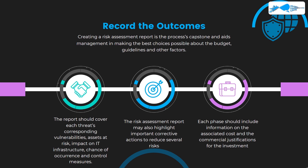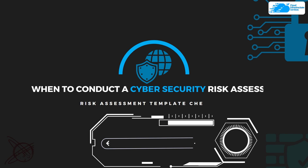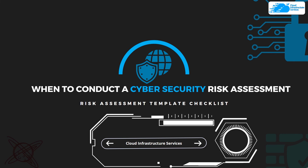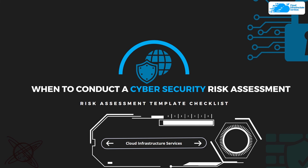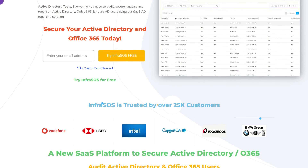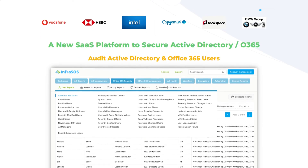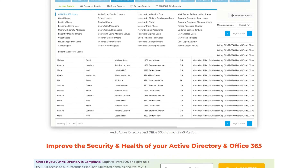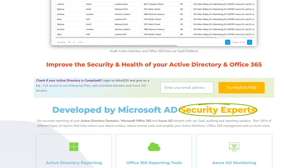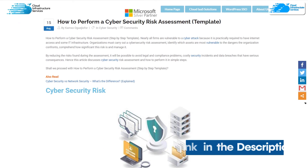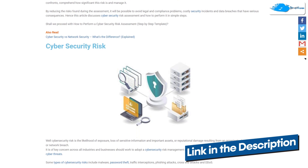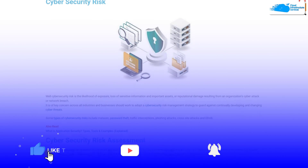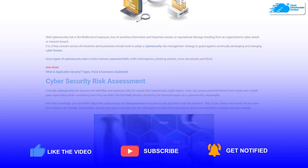That brings us to the end of this risk assessment template. One remaining question is when to conduct a cyber security risk assessment — in most organizations it is recommended to run this checklist once every year. You can also check out the Office 365 and Active Directory auditing tool known as InfraSOS, which helps users confirm their Active Directory and Office 365 users are compliant and secure from potential cyber attacks. If you want to learn more, click the link in the description for the step-by-step blog post guide by Cloud Infrastructure Services. If you learned anything new, please leave a like and subscribe to the channel.